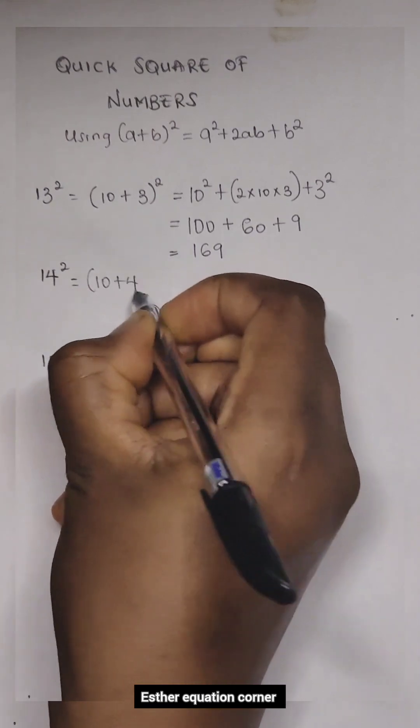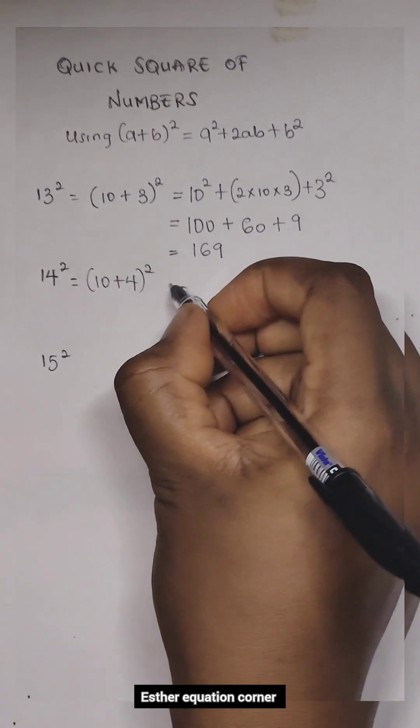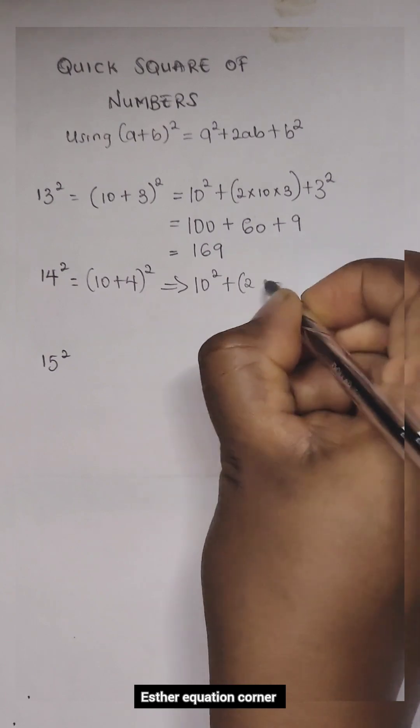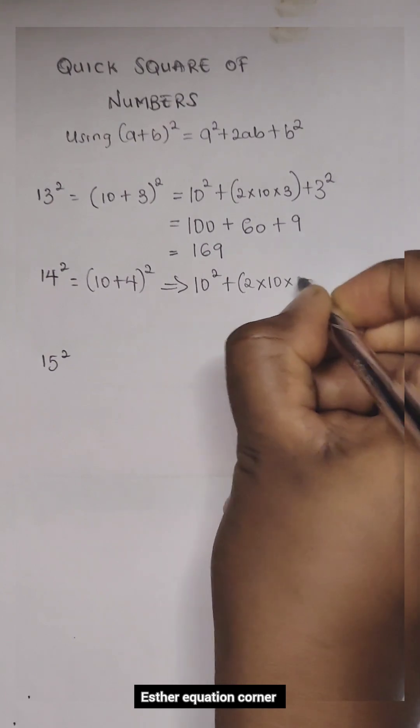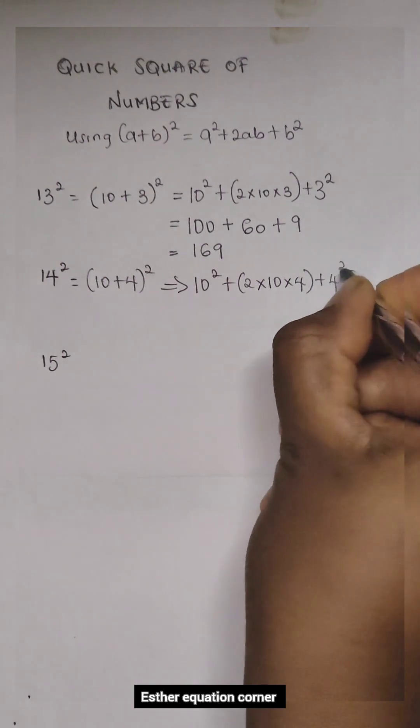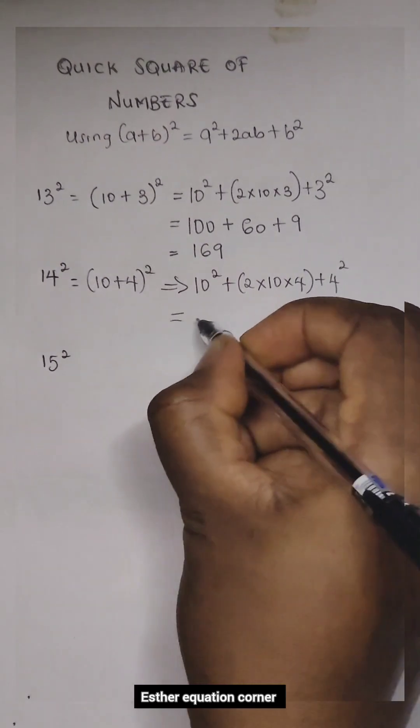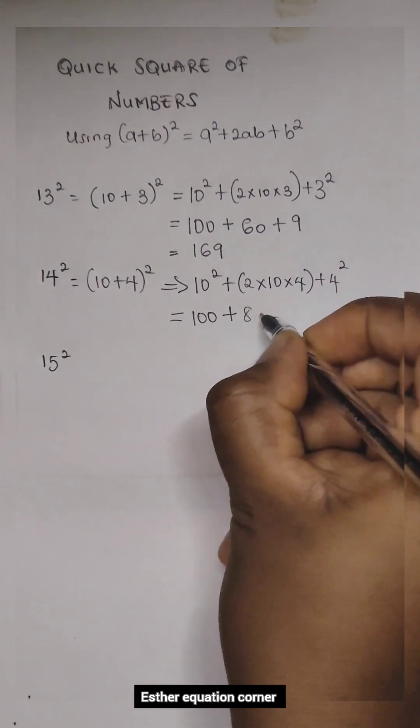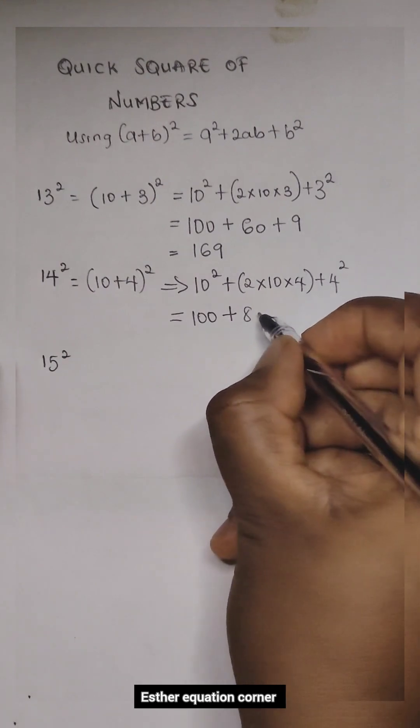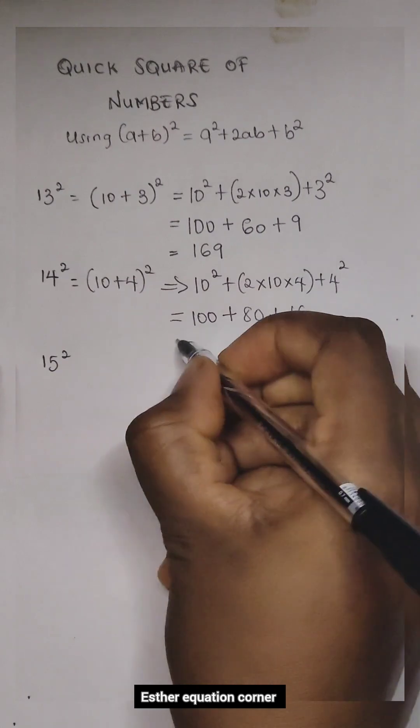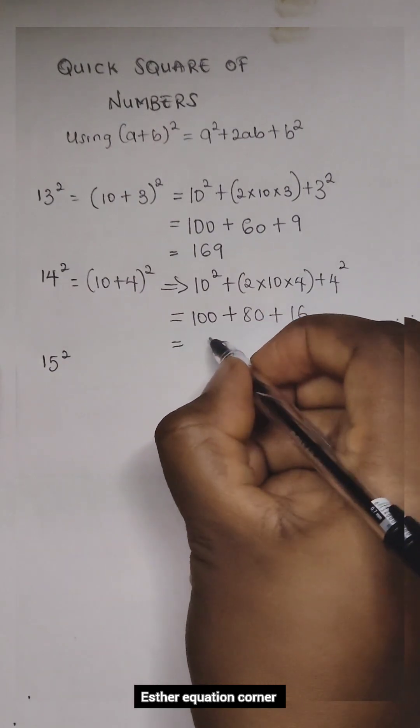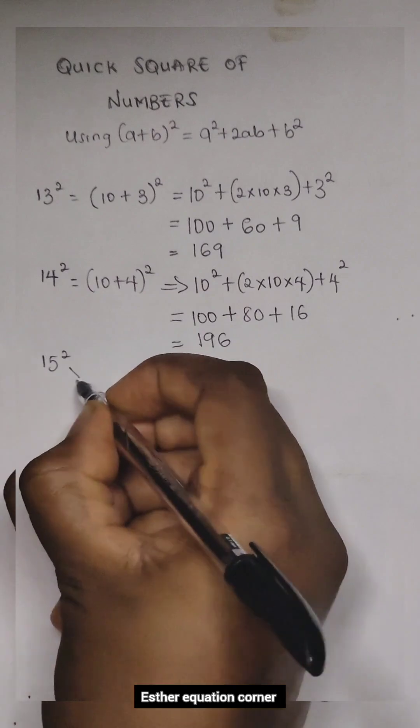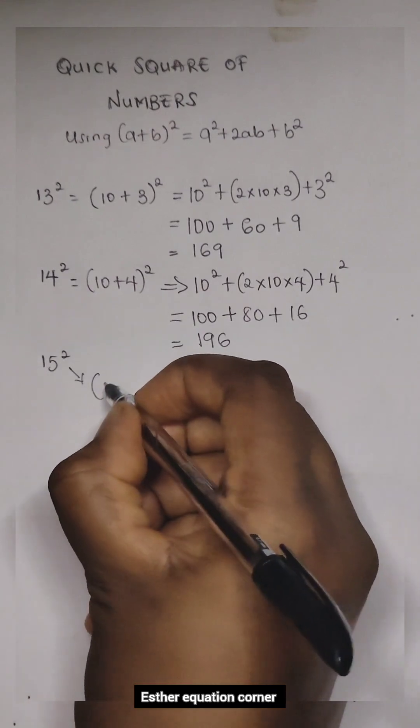14² equals (10 + 4)², which will give us 10² + 2 times 10 times 4 + 4². This will give us 100 + 80 + 16, equal to 196.